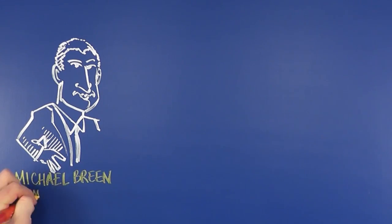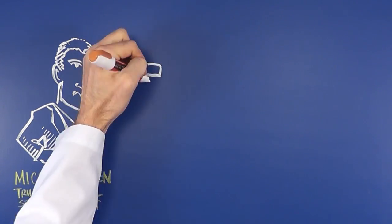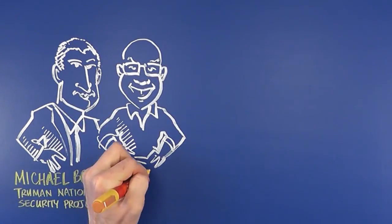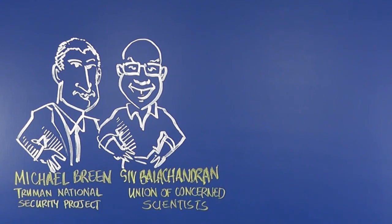I'm Michael Breen, a former army officer and executive director at the Truman National Security Project. And I'm Siv Balachandran, engineer and analyst at the Union of Concerned Scientists.